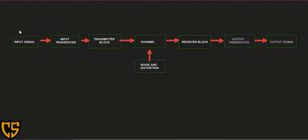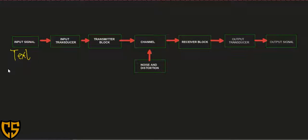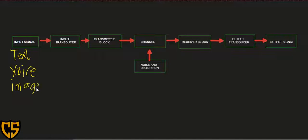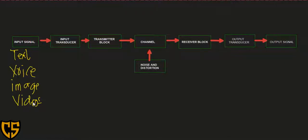Examples of input signals include text — this refers to images and text — and we are also transmitting input signals in the form of voice. Voice signals are very familiar to us. Another input signal we transmit is image, and also we have video. Take note that these input signals are non-electrical signals.